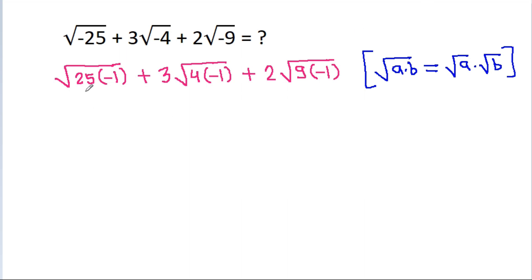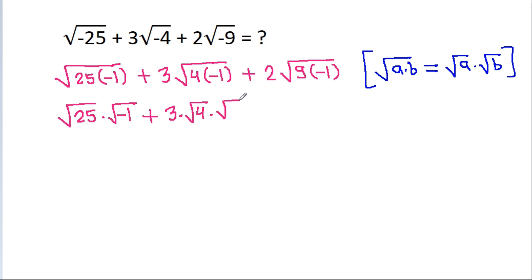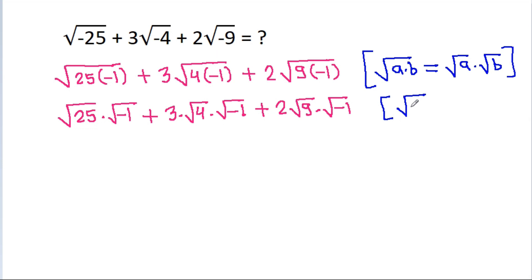So this will be equal to square root of 25 times square root of minus 1, plus 3 times square root of 4 times square root of minus 1, plus 2 times square root of 9 times square root of minus 1. And square root of minus 1 is equal to iota.